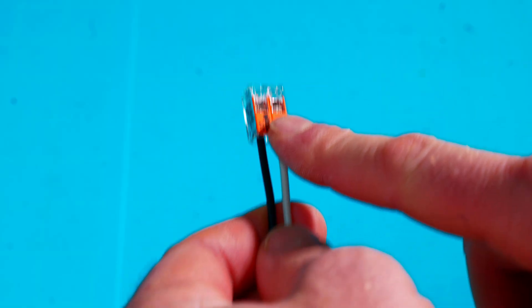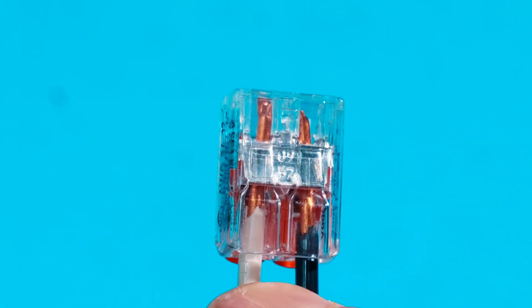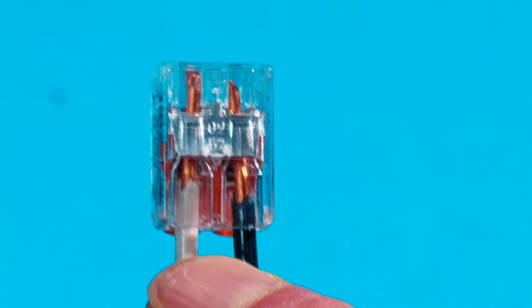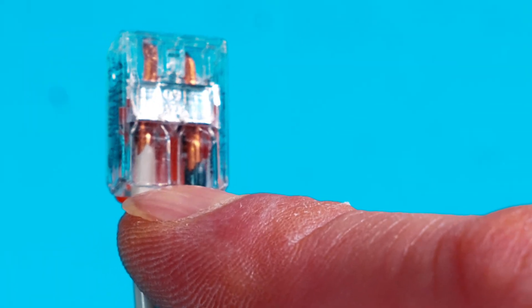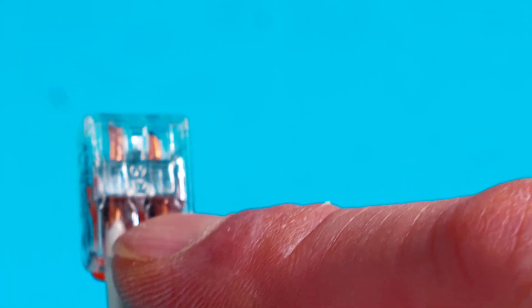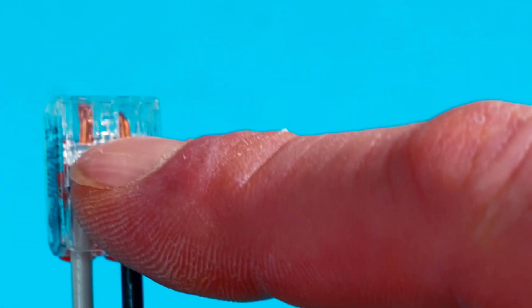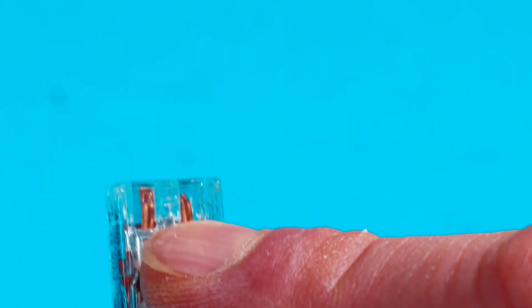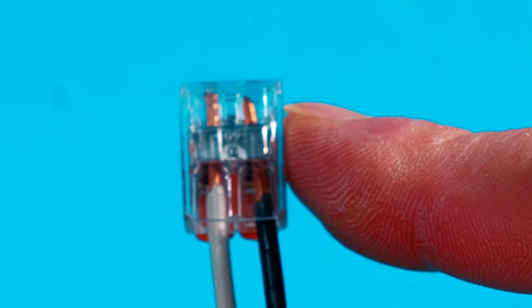Now the biggest thing when using your Wago 221s is making sure your wires are properly stripped, and you're not leaving any kind of bare wires coming out of your connector because, of course, if you have exposed copper that is just ripe for arcing, shorting, or a fire, you want the insulation to protrude into your connector, into the barrels a little bit, but you don't want so much insulation where it's also not making a good connection.